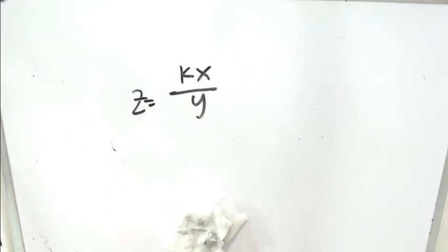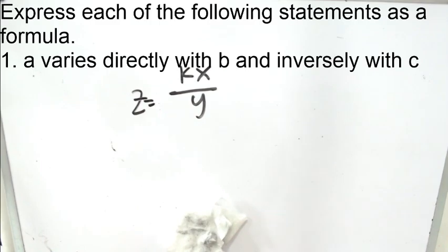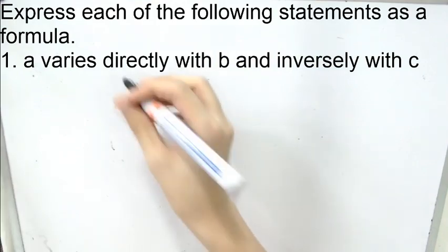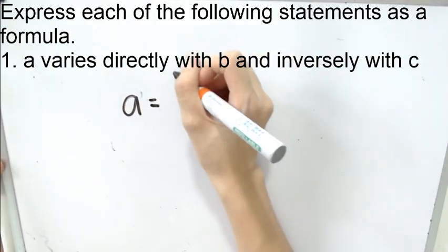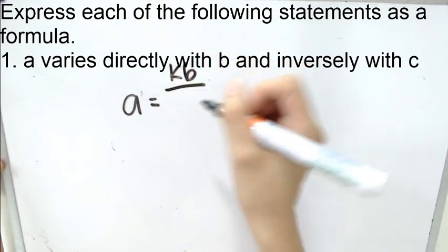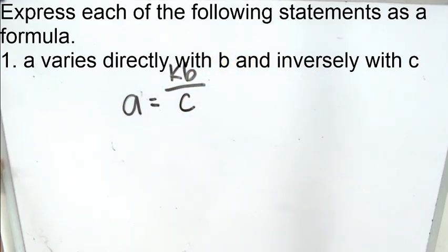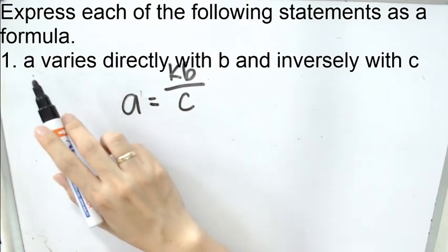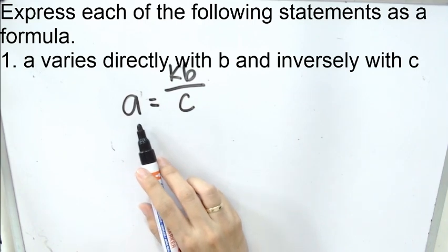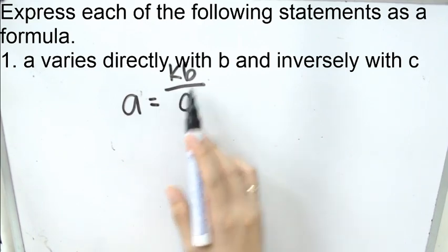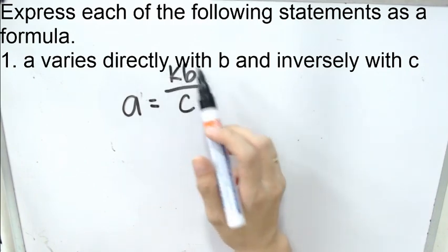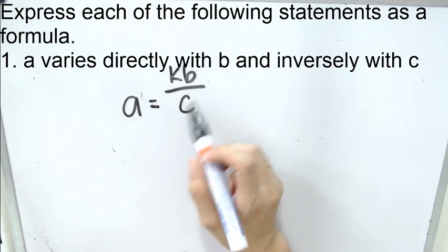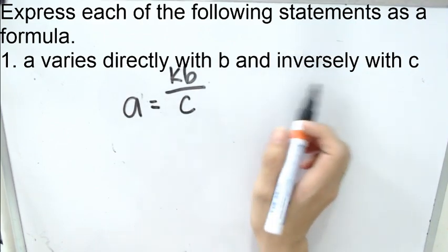Let's take a look at our first example. If a varies directly with b and inversely with c, a varies directly with b, and inversely with c. Again, a is the first variable you have here. That's why it must be the first variable you will write. Varies directly, multiplication, and must be on top with the next variable b, kb over c, because of the word inversely.